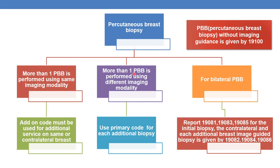The second scenario is when more than one PBB is performed using different imaging modalities. For example, one biopsy is performed using ultrasound and another using magnetic resonance imaging. In that case, use the primary code for each additional biopsy — one primary code for ultrasound and one primary code for MR guidance.